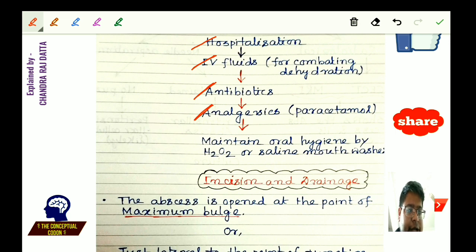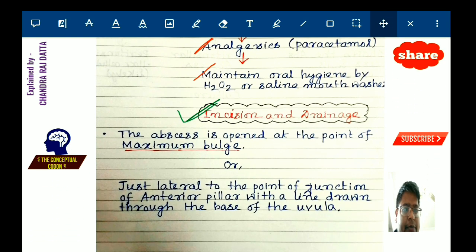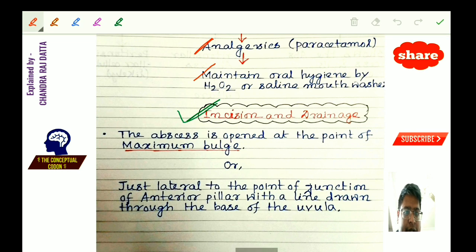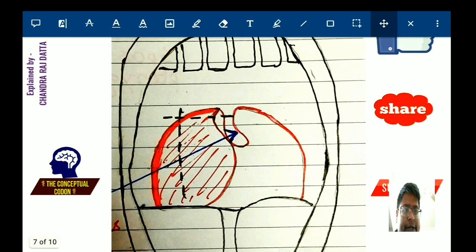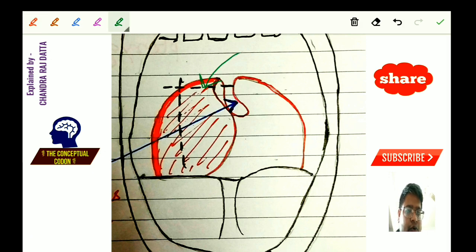Oral hygiene is maintained with hydrogen peroxide or saline mouthwash. The definitive treatment is incision and drainage. The abscess is opened at the point of maximum bulge, which is at the dependent part — just lateral to the junction of the anterior pillar with a line drawn through the base of the uvula. The incision is given just lateral to this intersection point.